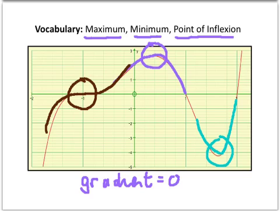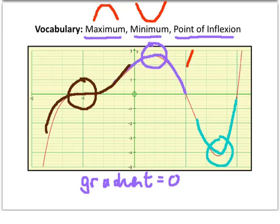So three types of stationary point — to recap: we've got the maximum, that's where the curve comes up, stops, levels off, then continues going back down. A minimum, where the curve comes down, stops and goes back up. And the point of inflection, that's where a curve rises, levels off at a gradient of zero and then continues back up. So: maximum, minimum and point of inflection.